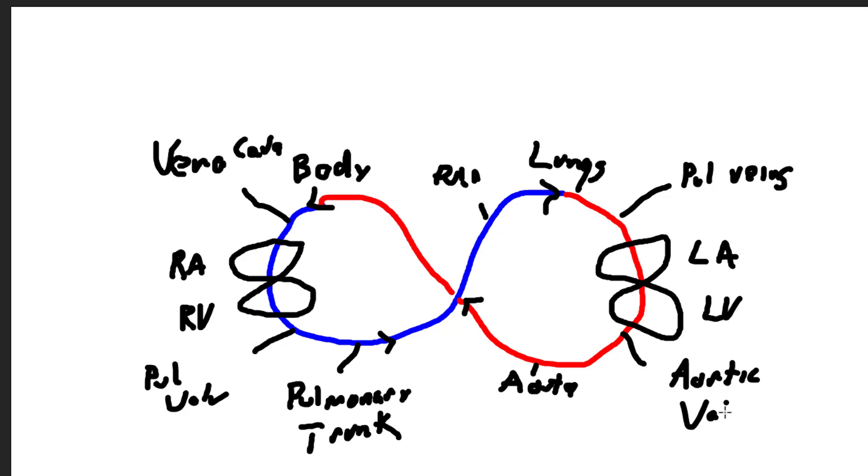And between the right atrium and right ventricle would be the RAT or the right atrioventricular valve or tricuspid. And between the left atrium and left ventricle would be the LAMB or the left AV valve, mitral valve or bicuspid.